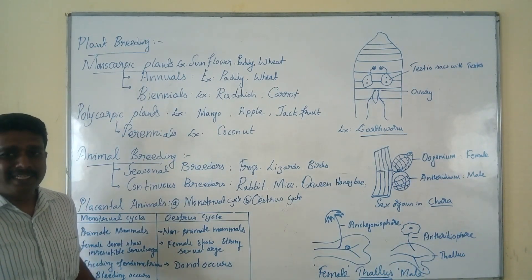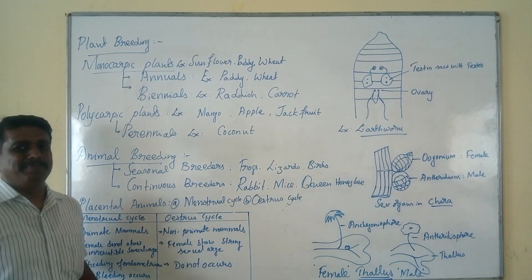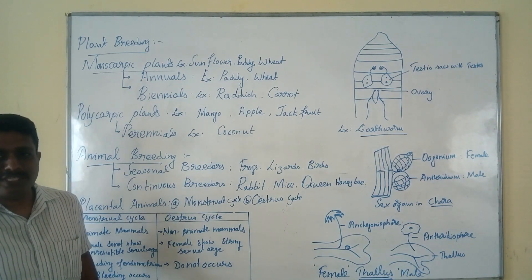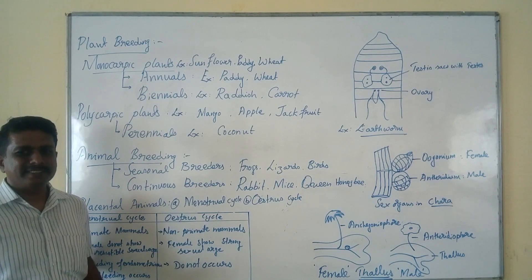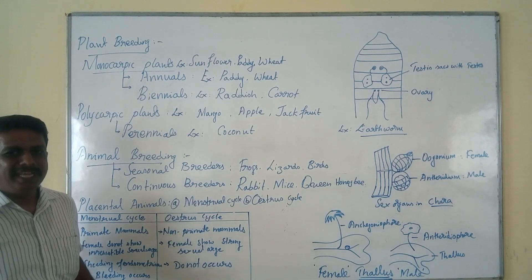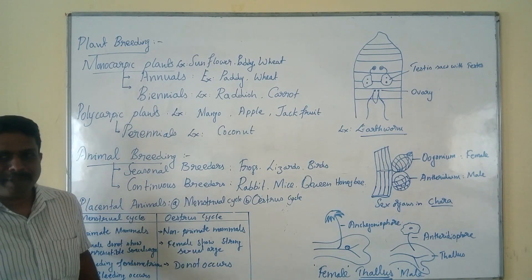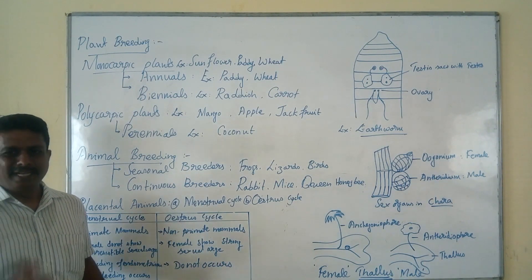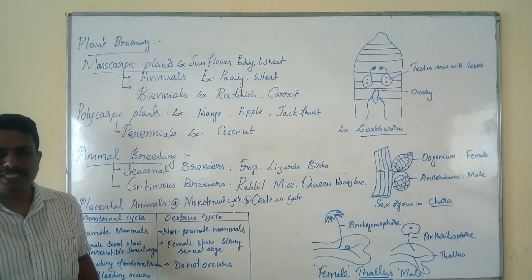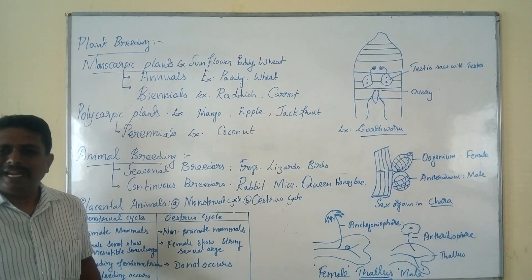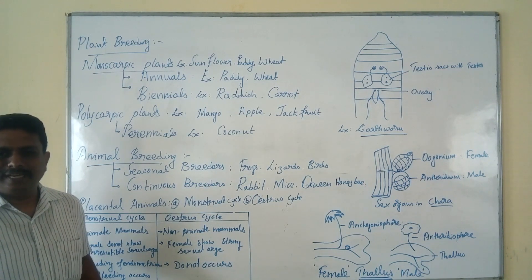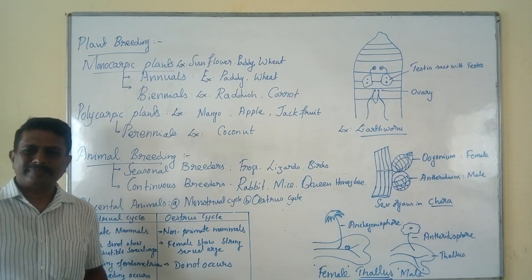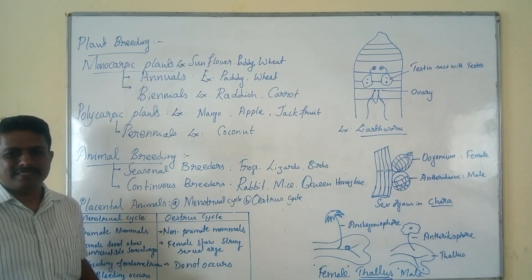Monocarpic plants are either annuals or biennials. In valid terminology, monocarpic plants are defined as plants that produce flowers only once in their lifetime.